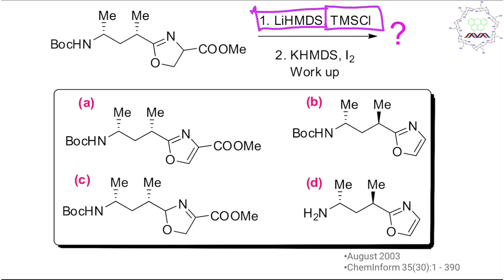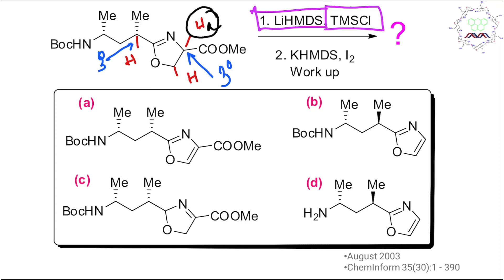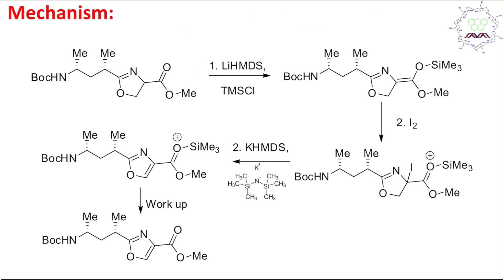This bulky base abstracts a proton selectively. There are three protons which are significantly acidic: this one, this one, and another one alpha to the carbonyl. Comparing from the acidity point of view, two of them are tertiary protons. However, H-a is more acidic compared to the others because it sits between a nitrogen-carbon double bond and is alpha to the carbonyl — so H-a is the most acidic.